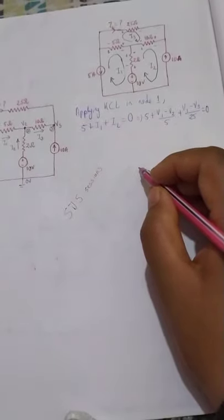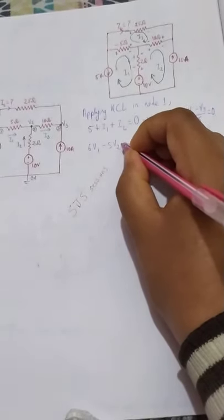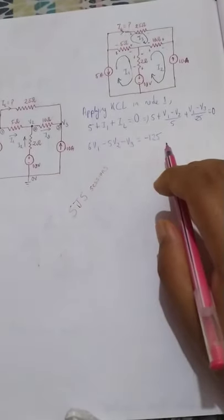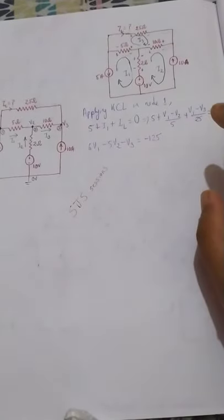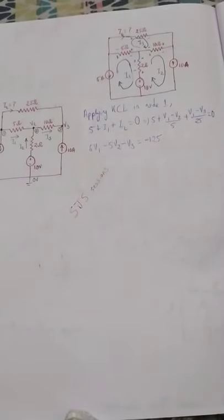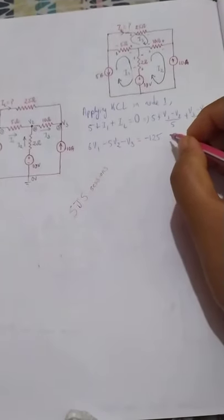Simplifying this equation gives: 6V1 − 5V2 − V3 = −125. Please verify this yourself as there may be human error in manual calculation. This is Equation 1.